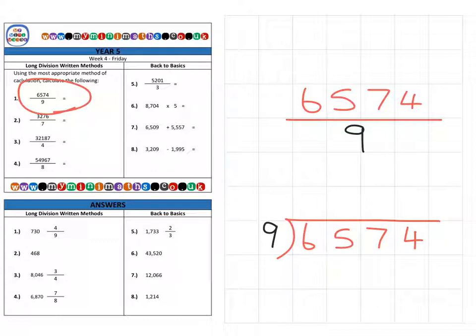6,574 and we're dividing that by nine. So we're going to need our nine times table today. How many nines fit into six? Too big. So we place zero here and we carry that six over to the next number. How many nines fit into 65? Well, that's going to be seven, which is 63, leaving two to carry over to the next column.